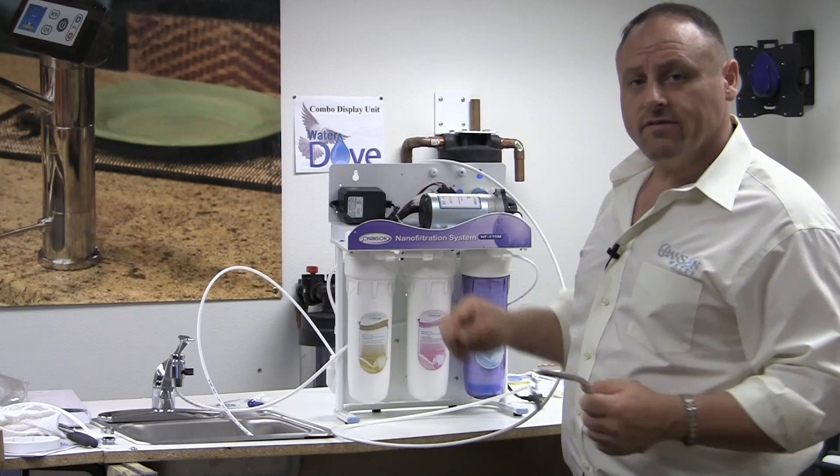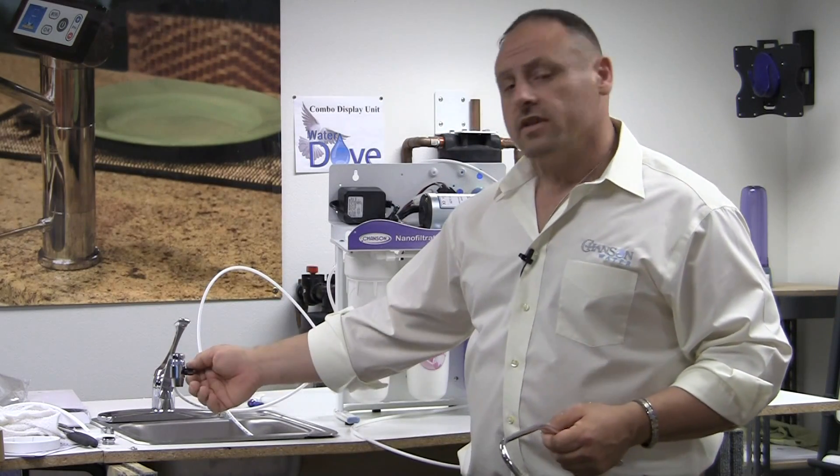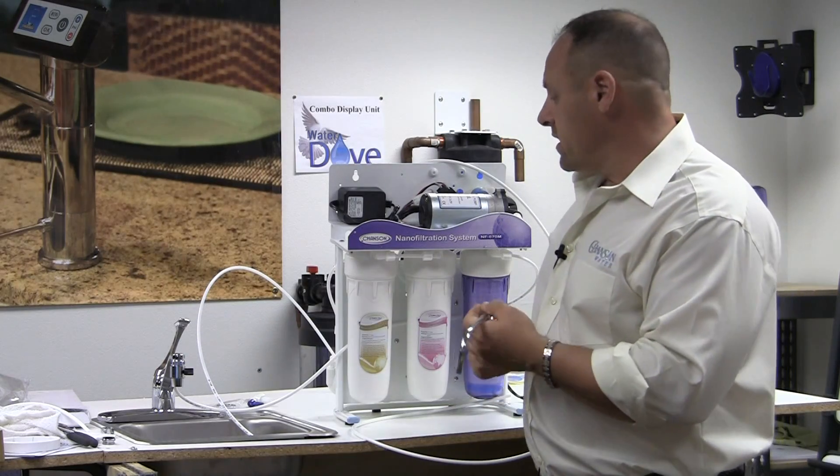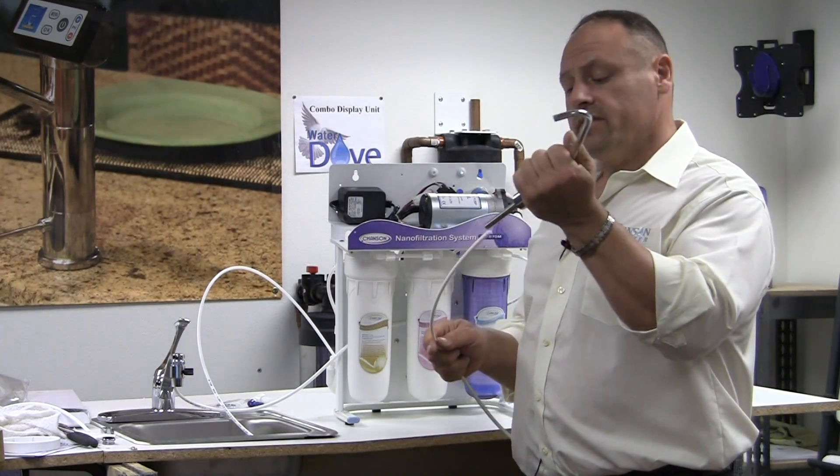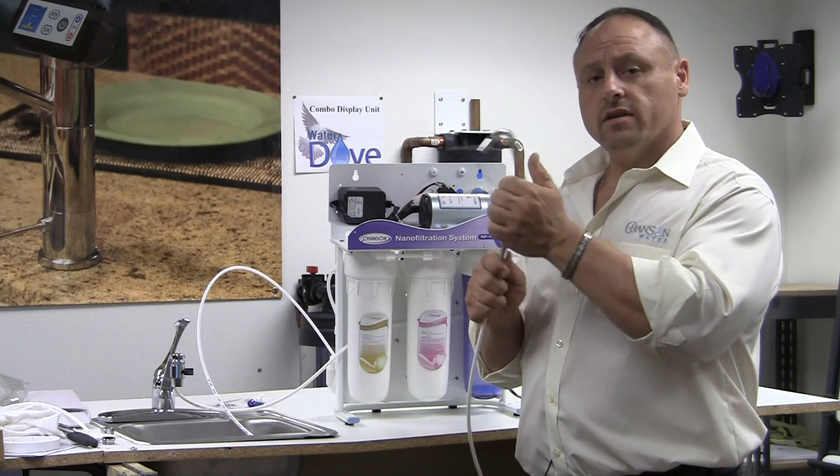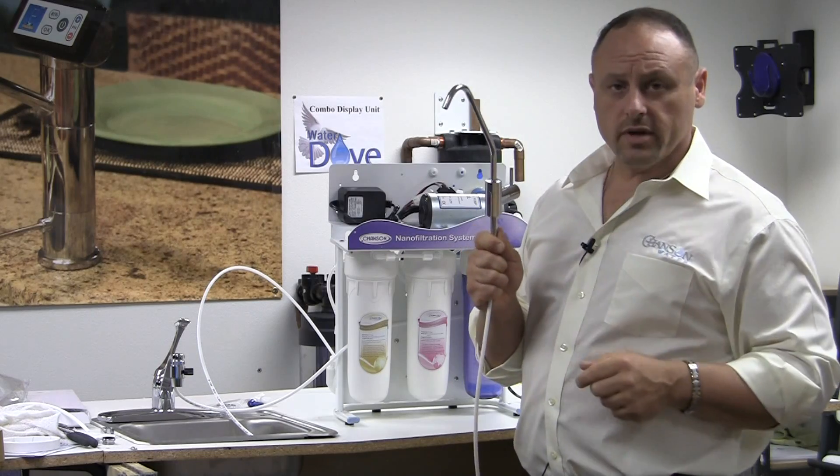So again, to turn this on and to have it running, you'd open your cold here. Make sure the lever is sideways here. It will send pressure to this line, and if this line is connected to a faucet, then you also need to open this faucet. The water will not turn on until you open this faucet.